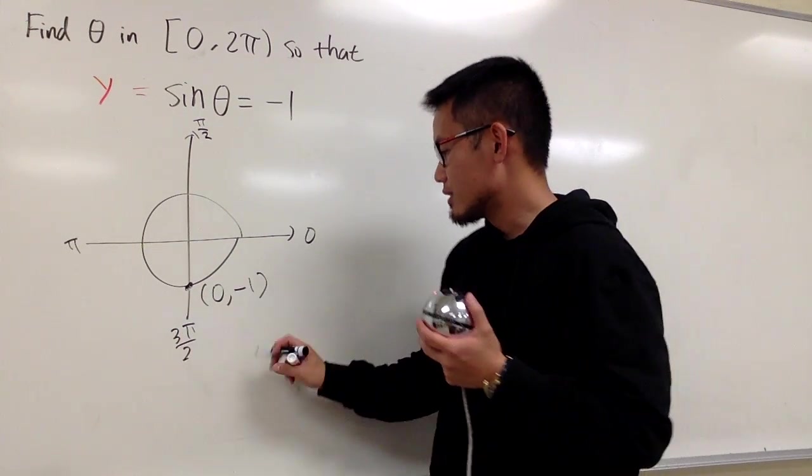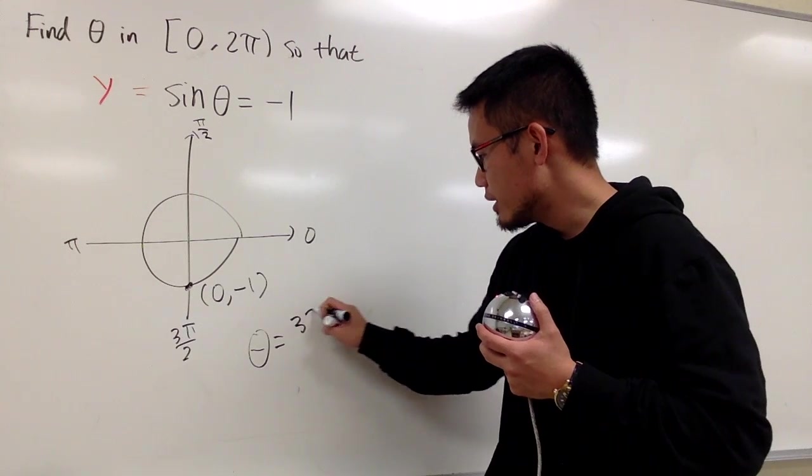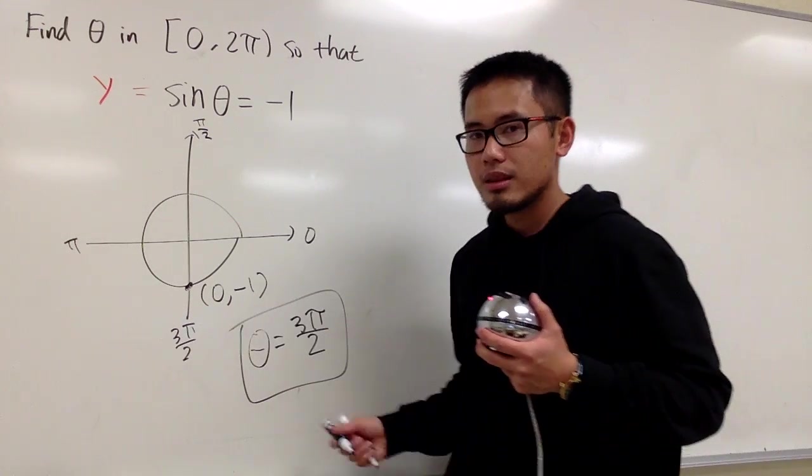That's the answer, isn't it? So, theta equals 3π over 2. Done.